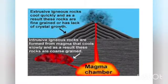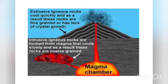Look at this picture — it is explaining extrusive and intrusive rocks. This is the magma chamber. The extrusive igneous rocks are formed due to the quick cooling of magma, and as a result these rocks are fine-grained or lack crystal growth. On the other hand, intrusive igneous rocks are formed from magma that cools very slowly, and as a result these rocks are coarse-grained.